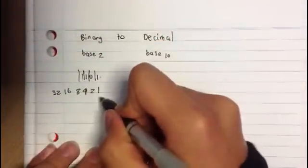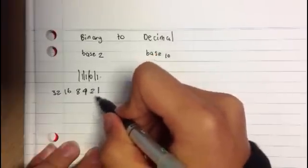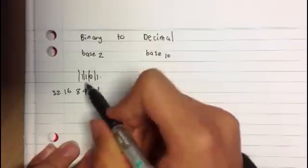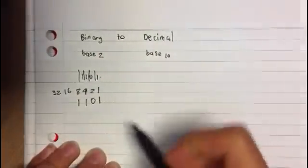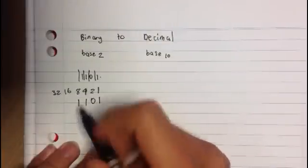So here we have 1, that means we have 1. 0, we'll place that underneath the 2. 1, place that under the 4. 1 there, place that under the 8. So that would mean we have 8,